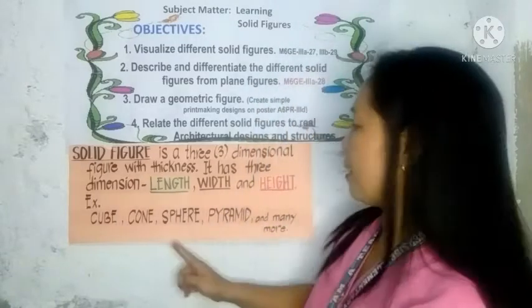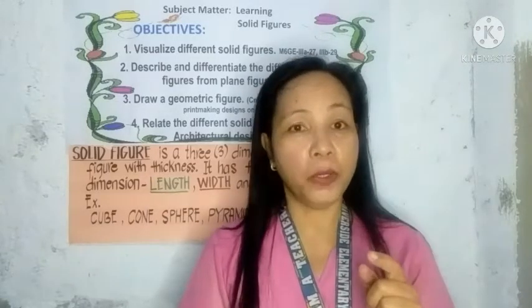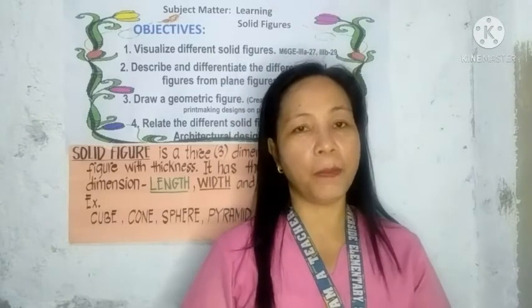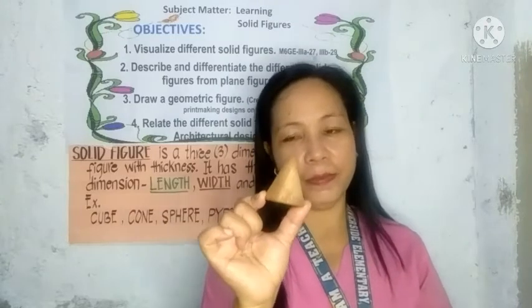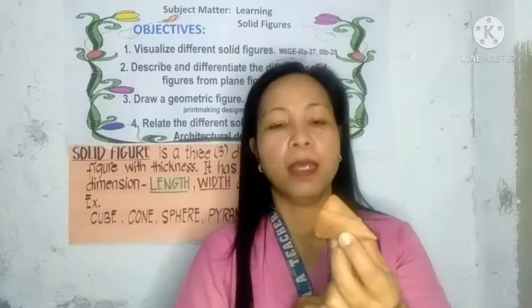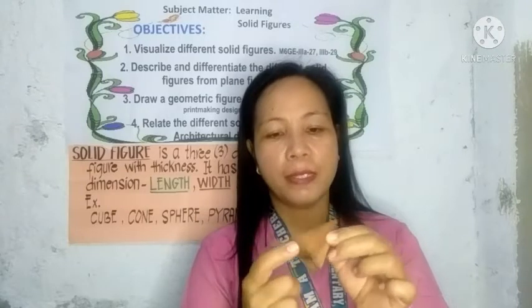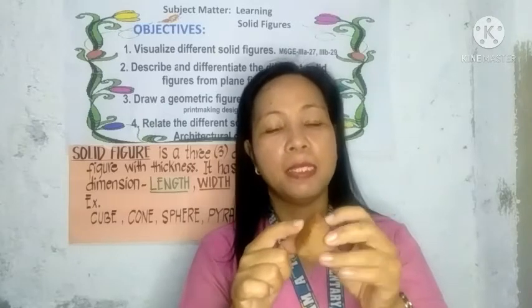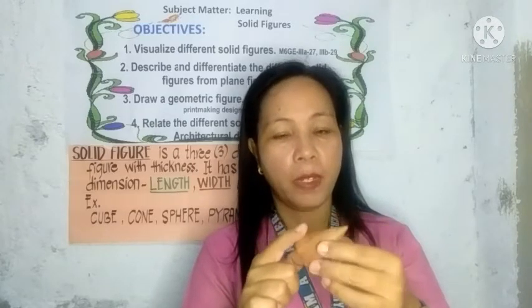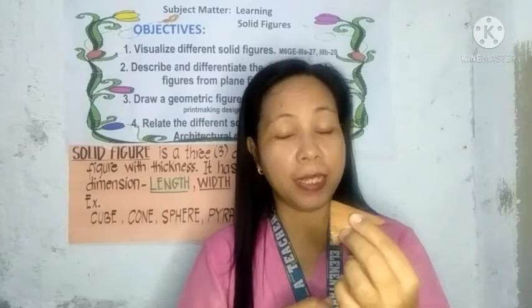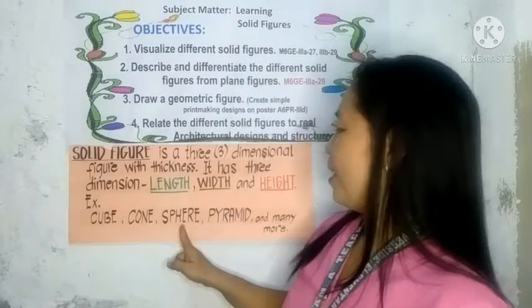Next example: the cone. We see a cone every time we eat an ice cream. Here is a wooden example of a cone. How many circular bases does it have? Correct — it has only one circular base, and the body is also in a circular form. This solid figure is called a cone.